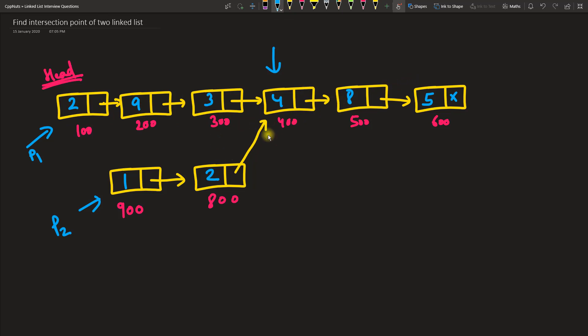The point is you find the count of this list first. If you count how many nodes are there in this list, there are six nodes, so c1 is six. If you find the count of this linked list, which is one, two, three, four, five, so c2 is equal to five.